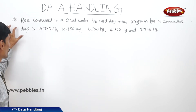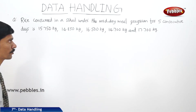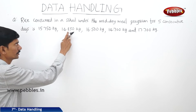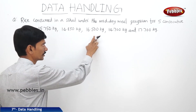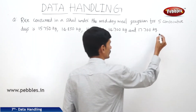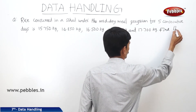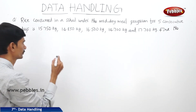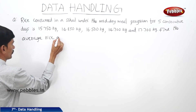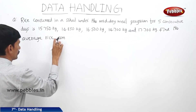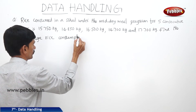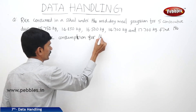Now let us see the next question. Rice consumed in a school under the midday meal program for 5 consecutive days is 15.750 kilograms, 14.850 kilograms, 16.500 kilograms, 14.700 kilograms, and 17.700 kilograms. Find the average rice consumption for the 5 days.